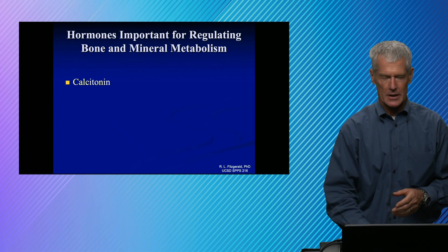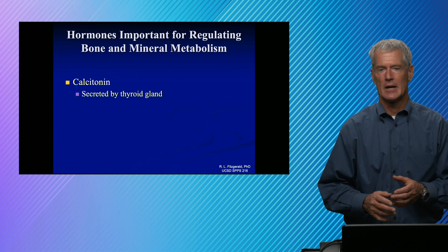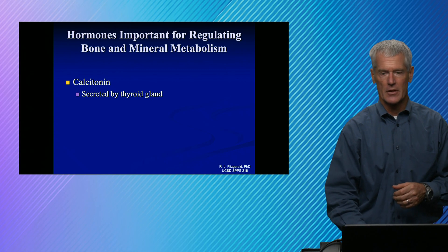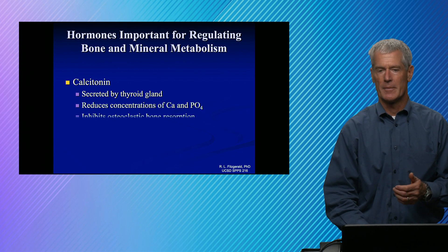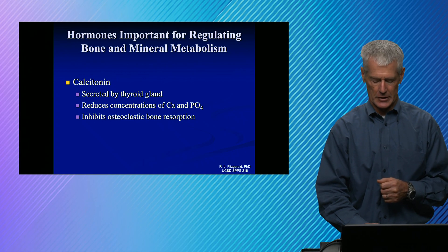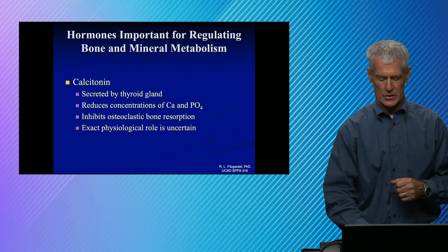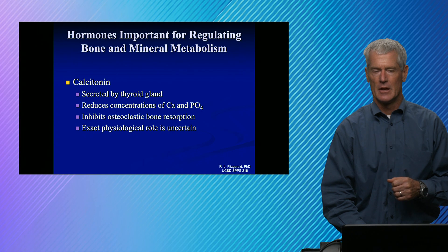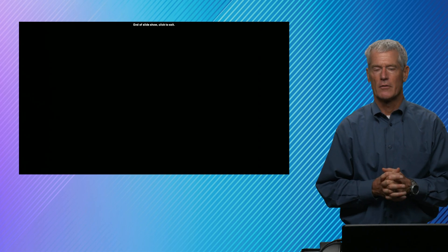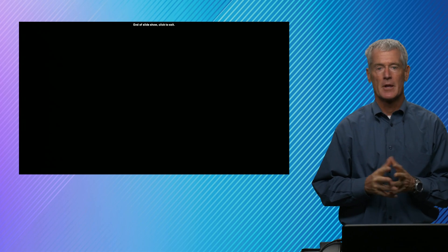Calcitonin is not as well understood as PTH and 1,25-dihydroxyvitamin D, but generally it reduces calcium concentrations. It is secreted by the parafollicular cells of the thyroid gland and generally reduces both calcium and phosphate. It also stops the breakdown of bone and has been used to treat some bone diseases as a drug. It does have different effects at different concentrations, so it's not quite as clear-cut as PTH and vitamin D, but generally it reduces calcium and phosphate concentrations. That's a quick overview of calcium, phosphate, and magnesium, and the hormones that help control their concentrations in circulation. Thanks again for tuning in.